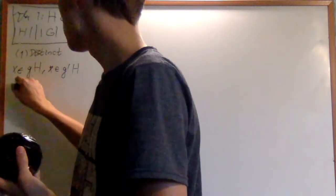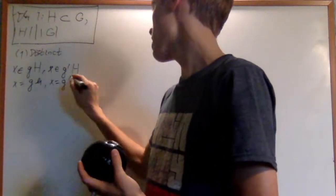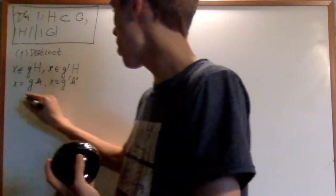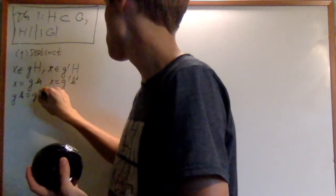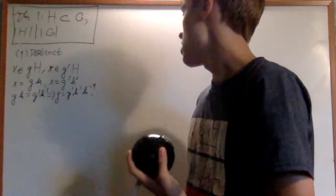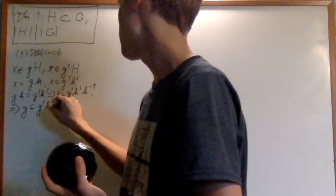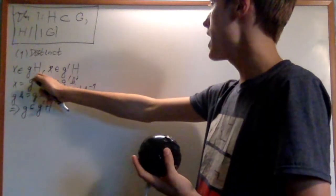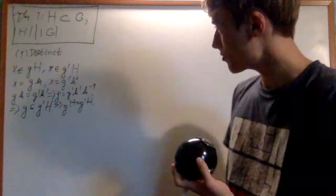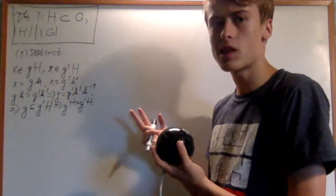This means that x is going to be equal to some gh, and this one means that x is going to be some g'h'. By the transitivity of equality, I have gh equals g'h', which means that g is equal to g'h'h inverse. That means that g is just an element of g'H by definition. So if x is an element of gH and x is an element of g'H, that means gH equals g'H, because an element of a coset generates the same coset. There are no two different cosets that share elements, so they're distinct.